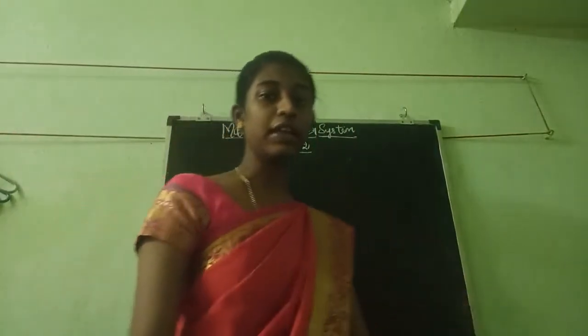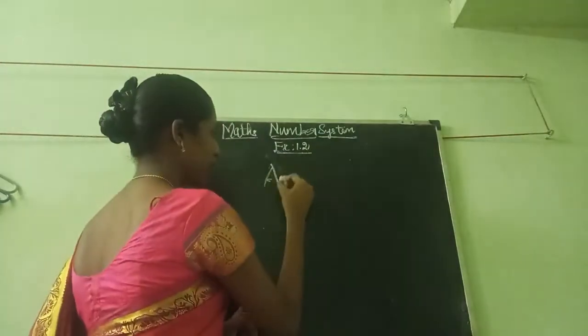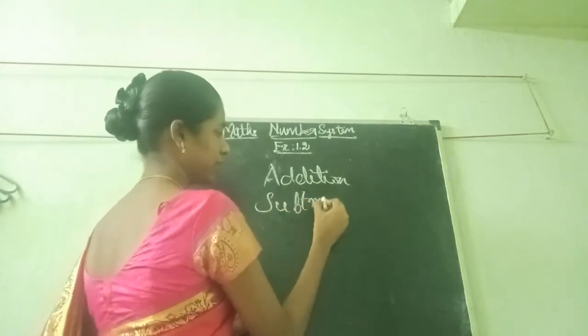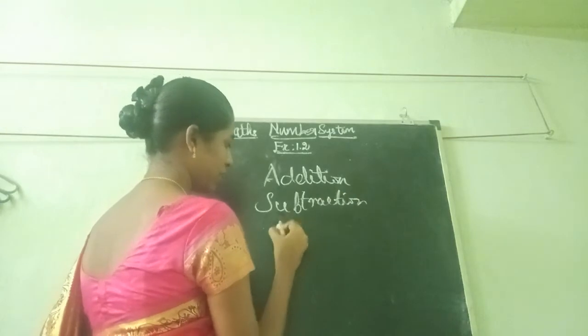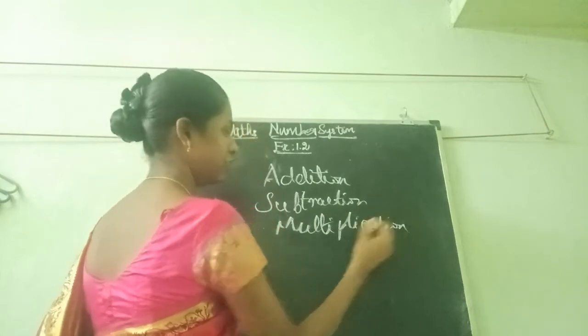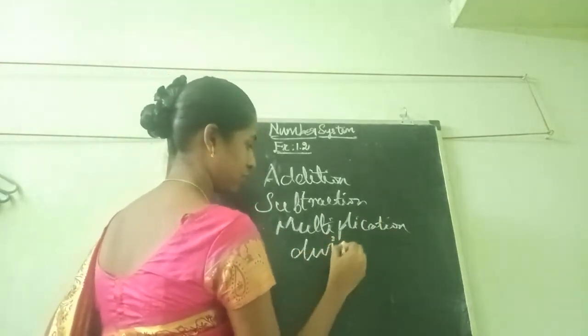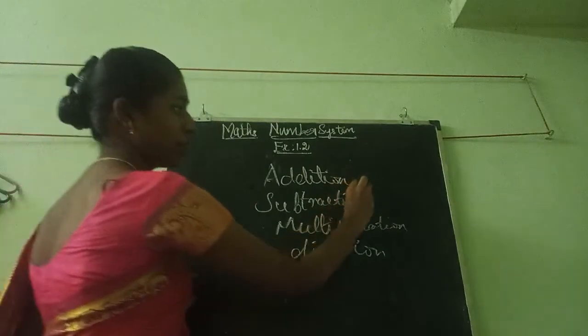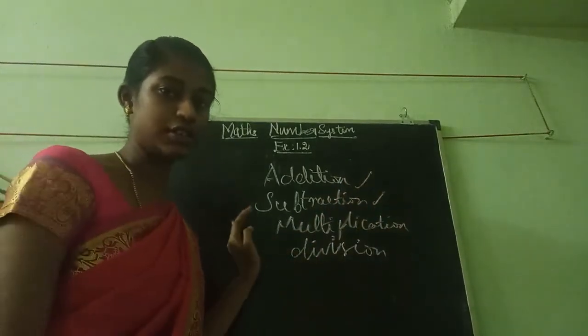Hi students, welcoming you for this video class. Today we are going to see about number system exercise 1.2. In exercise 1.2 we are going to see about operations. Operation means we have 4 operations: addition, subtraction, multiplication and division. In this we are going to see about addition and subtraction only in this exercise.